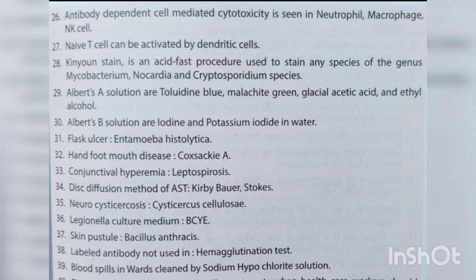Key associations: Flask ulcer — Entamoeba histolytica; Hand foot-mouth disease — Coxsackie A; Conjunctival hyperemia — Leptospirosis; Disc diffusion method of AST — Kirby-Bauer and Stokes method; Neurocysticercosis — Cysticercus cellulosae; Legionella culture medium — BCYE medium; Skin pustules — Bacillus anthracis.